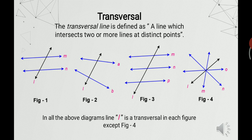A transversal is simply a line which intersects two or more lines at distinct points. For example, in figure 1, lines M and N are parallel lines and a line L intersects both the lines at distinct points, so line L is a transversal here. In figure 2, lines A and B are non-parallel lines and a line L intersects these lines at distinct points, so again L is a transversal in this case.